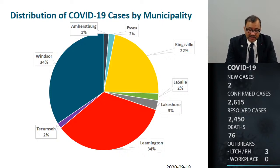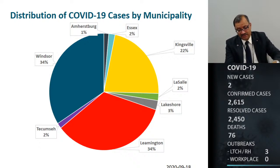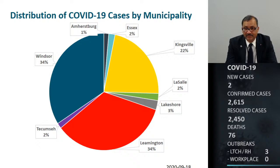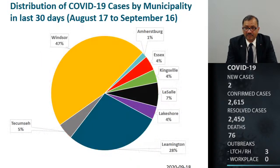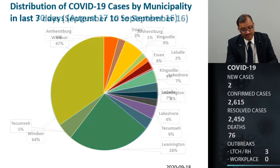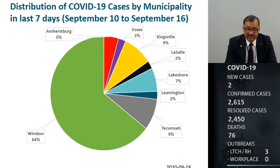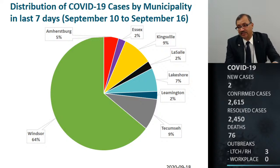Looking at overall cases in Windsor-Essex by municipality, the highest number of cases are reported in Windsor, Leamington, and Kingsville, and the rest of the municipalities have relatively lower numbers. Over the past 30 days, 47% of the cases are from Windsor, 28% from Leamington, and 7% from LaSalle, while other municipalities added minimal cases. In the last seven days, the City of Windsor accounts for most cases, while the rest of the municipalities showed a relatively stable number with no real spike in any particular municipality.